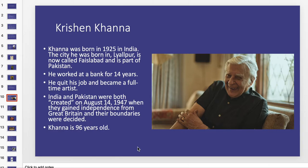We're going to look at examples of art from Krishankana Khanna. Khanna was born in 1925 in India while it was under imperial rule from Great Britain, and the city he was born in is now Faisalabad and is part of Pakistan — so there was a reorganization of land during his lifetime. He worked at a bank for 14 years, didn't originally set out to be an artist, but really fell in love with artwork, quit his job, and became an artist full-time. India and Pakistan were recreated on August 14th, 1947, when they gained independence from Great Britain and their boundaries were decided. Khanna is still alive today at 96 years old.